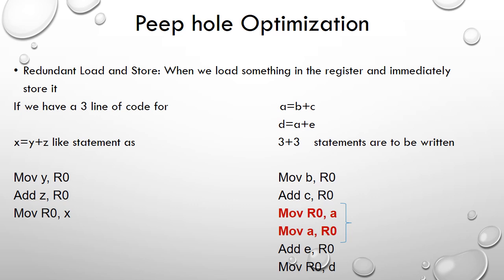For example, on the left-hand side we have the statement x = y + z. The assembly code is: move y, r0 (content of memory location y is brought to r0), then z is added to r0, and the result is stored in r0, then moved back to memory location x. On the right-hand side we have two statements: a = b + c and d = a + c. Following this rule, we write three statements for each, giving six assembly statements total.